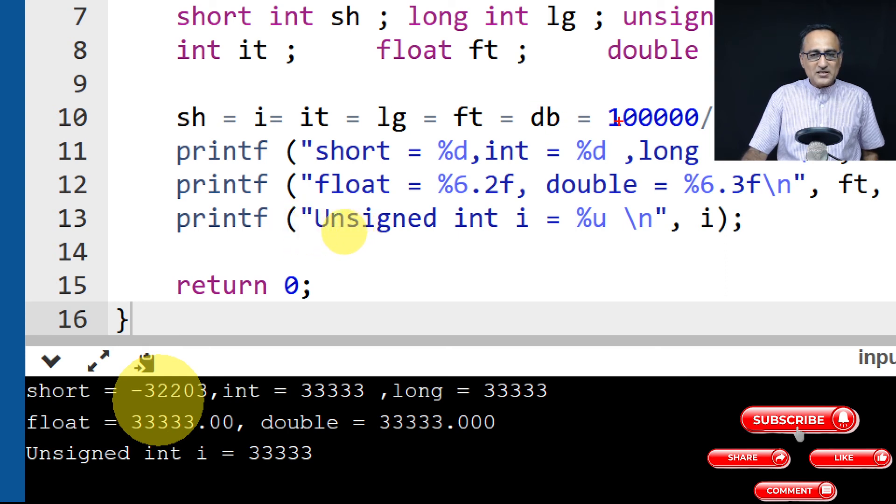So with double, the result was 33,333. It got stored in double as this value. It was copied to float, no problem. From float it was copied to long, the decimal part was lost.